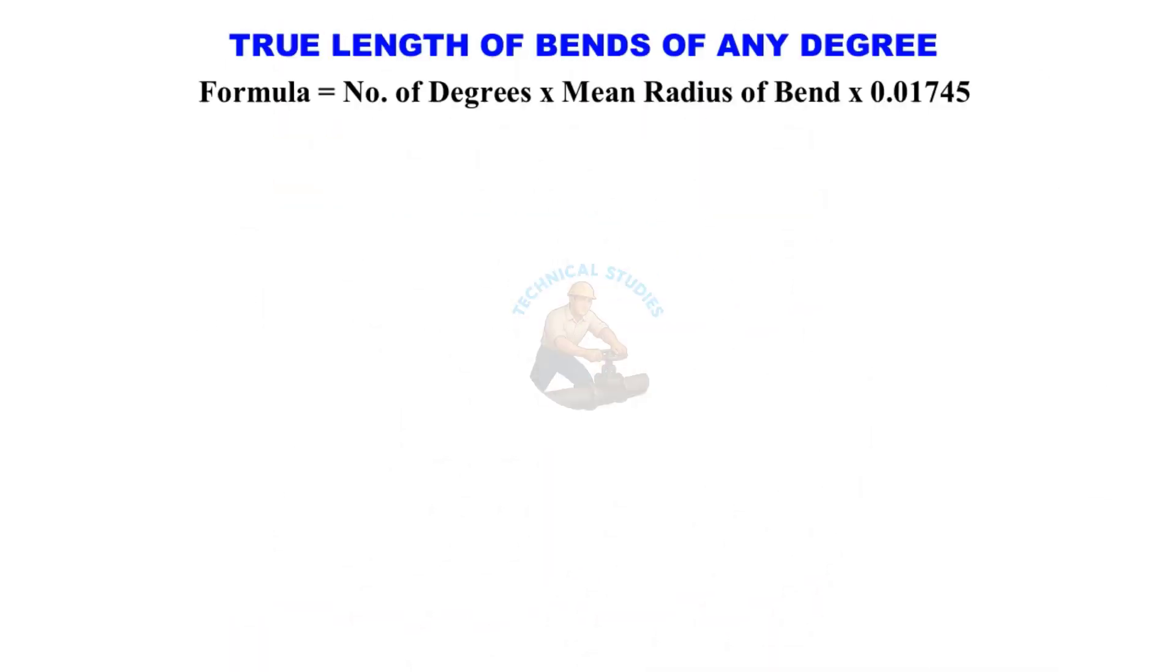Now let's learn the formula. True length equals number of degrees multiplied by mean radius of the bend multiplied by 0.01745.